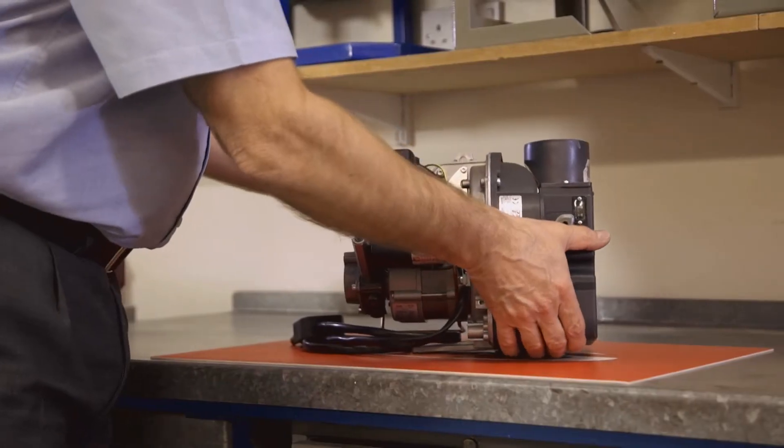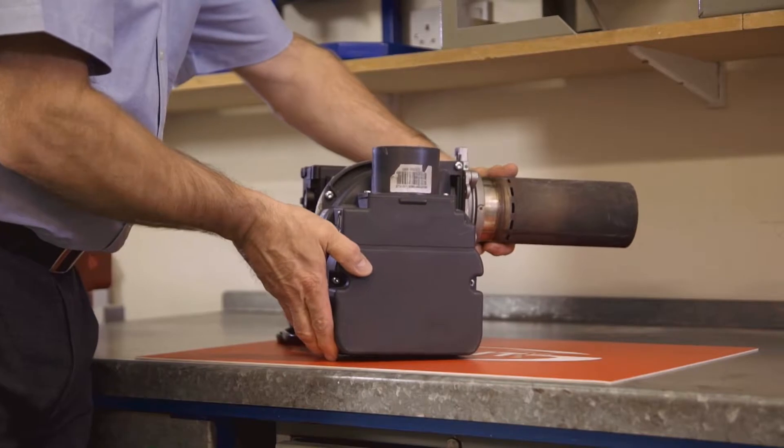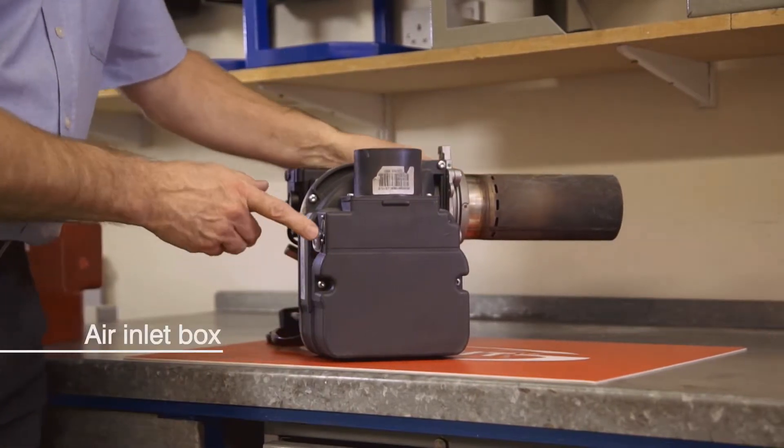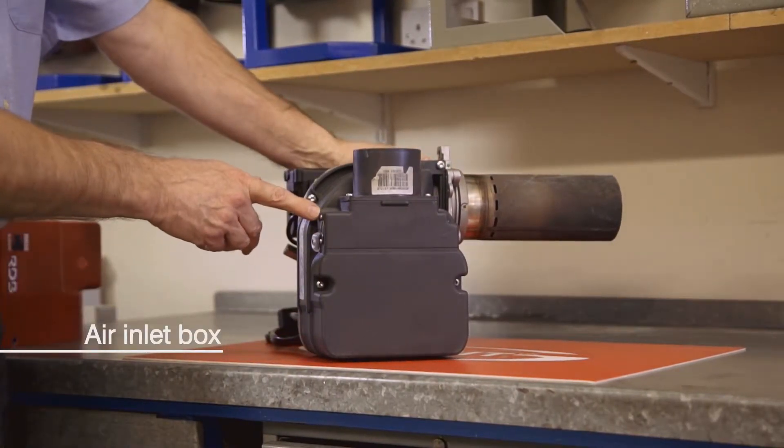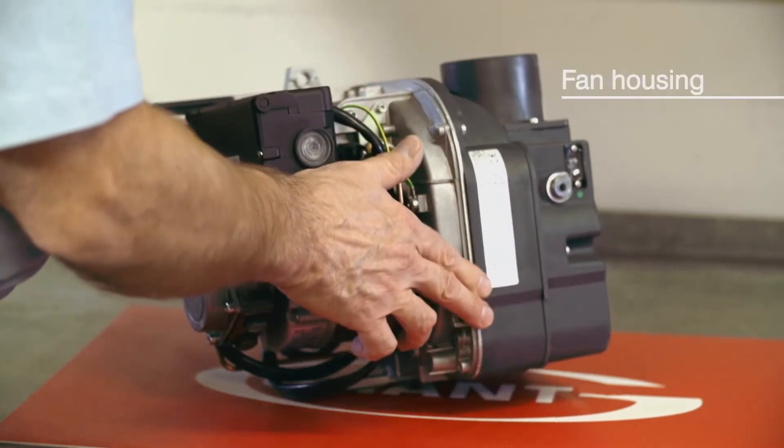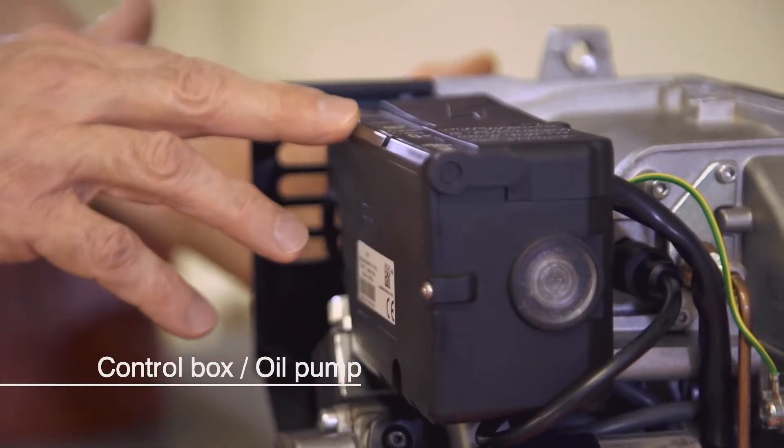The basic construction is the same as you're probably used to with the air inlet box and air adjuster on the right hand side, the fan housing in the center and the control box and oil pump on the left.